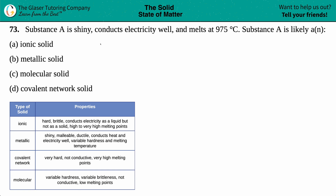Number 73. Substance A is shiny, conducts electricity well, and melts at 975 degrees Celsius.